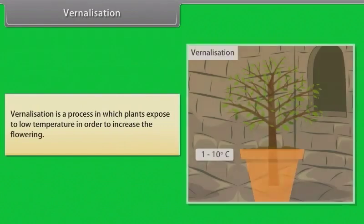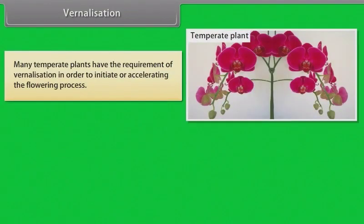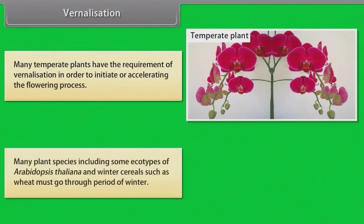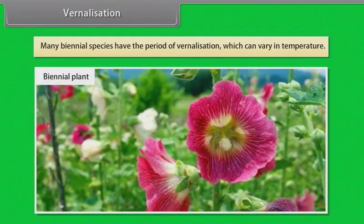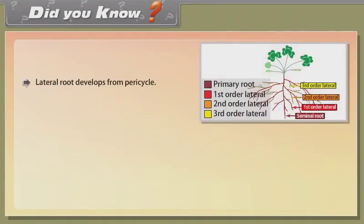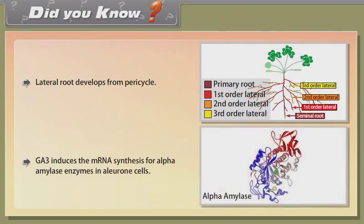Vernalization is a process in which plants are exposed to low temperature in order to increase flowering. Many temperate plants have the requirement of vernalization in order to initiate or accelerate the flowering process. Many plant species, including some ecotypes of Arabidopsis thaliana and winter cereals such as wheat, must go through a period of winter. Many biennial species have a period of vernalization which can vary in temperature. Did you know: Lateral root develops from pericycle. GA3 induces mRNA synthesis for alpha-amylase enzymes in aleurone cells.